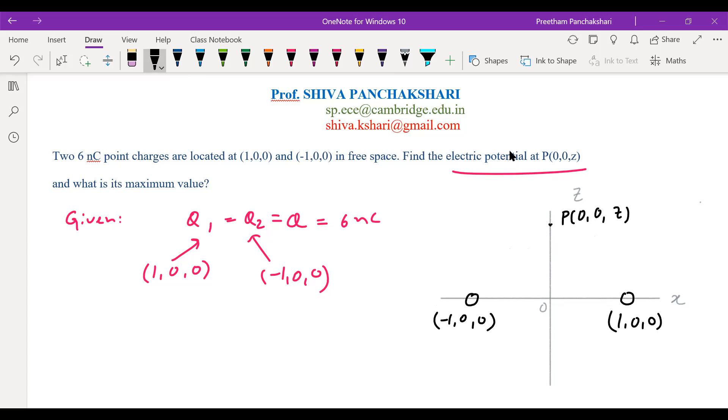The two charges, so two potentials are produced at the point P. The total potential is given by the addition of both the potentials. Superposition principle is applicable for electric field and electric potentials. Potentials are scalar quantities, so direction is not important here.